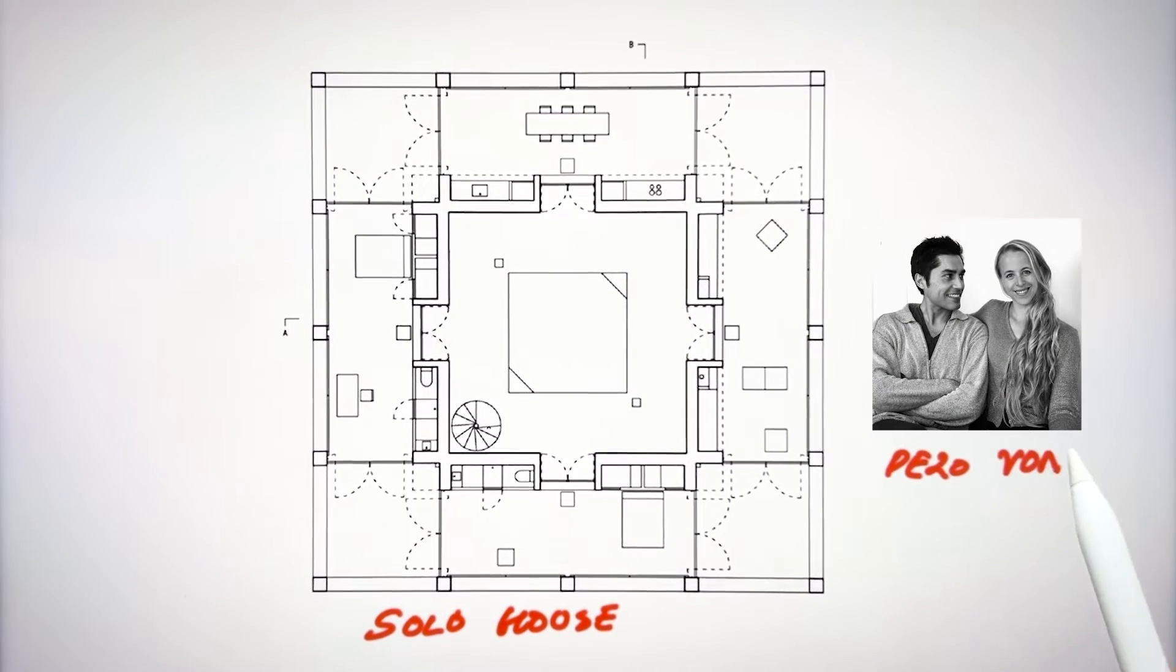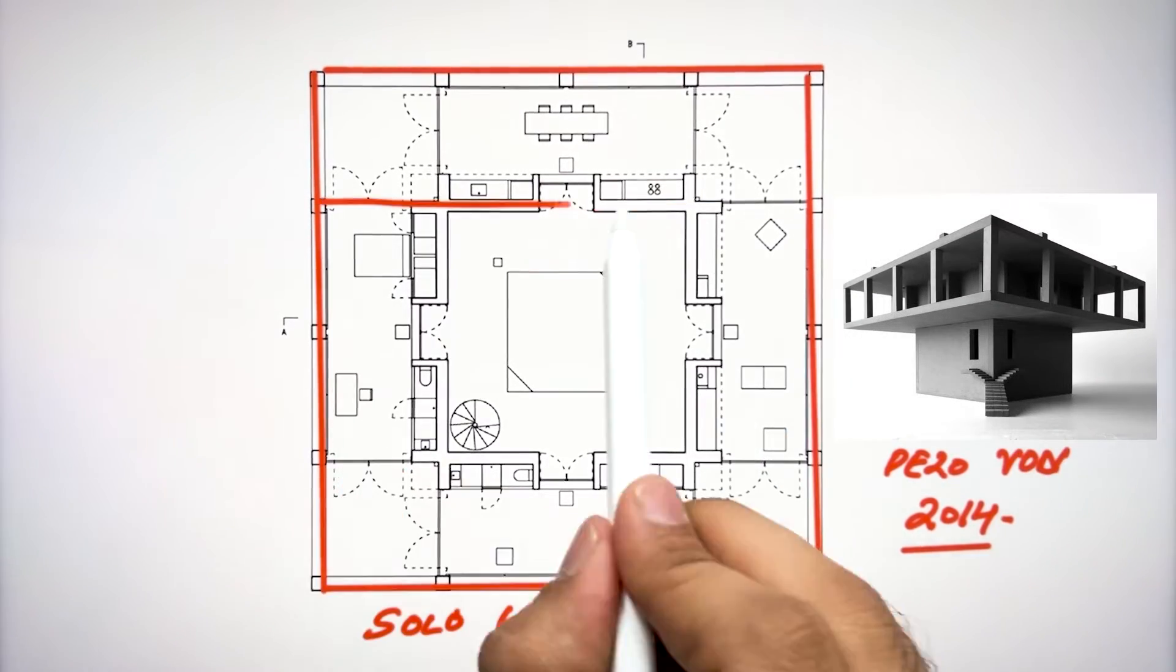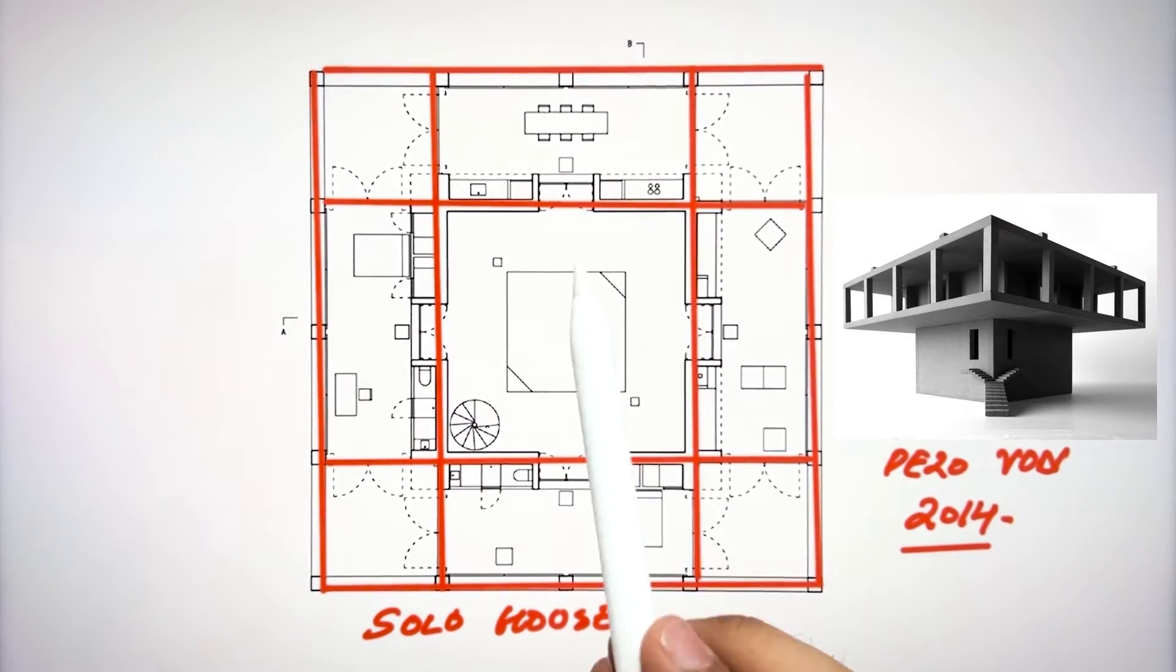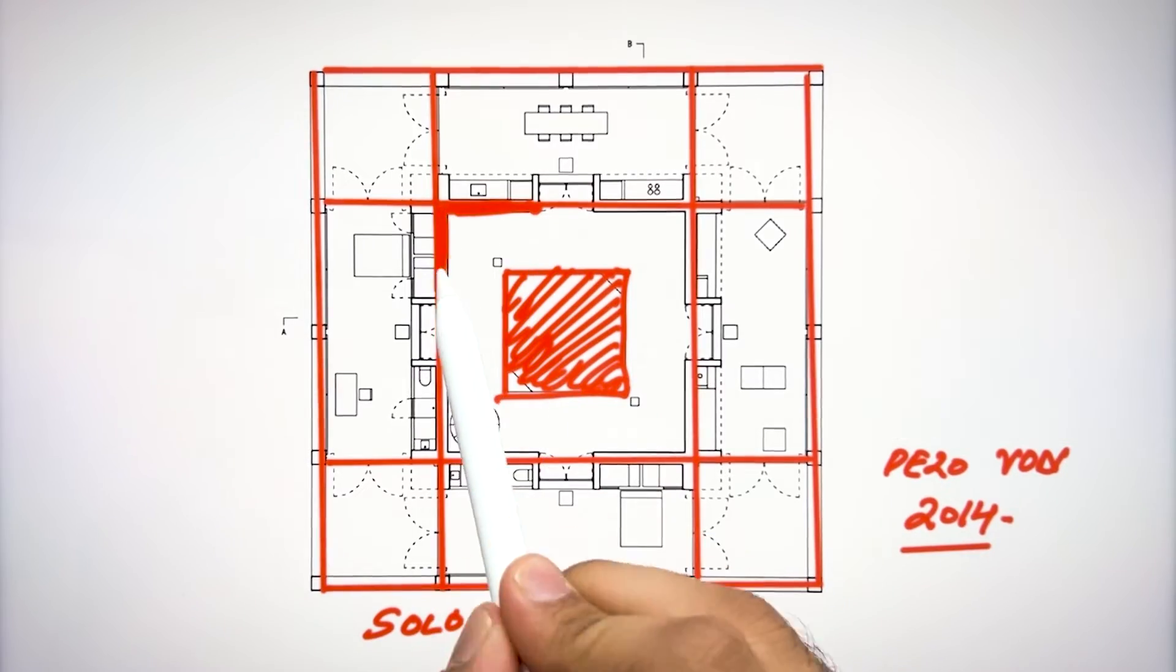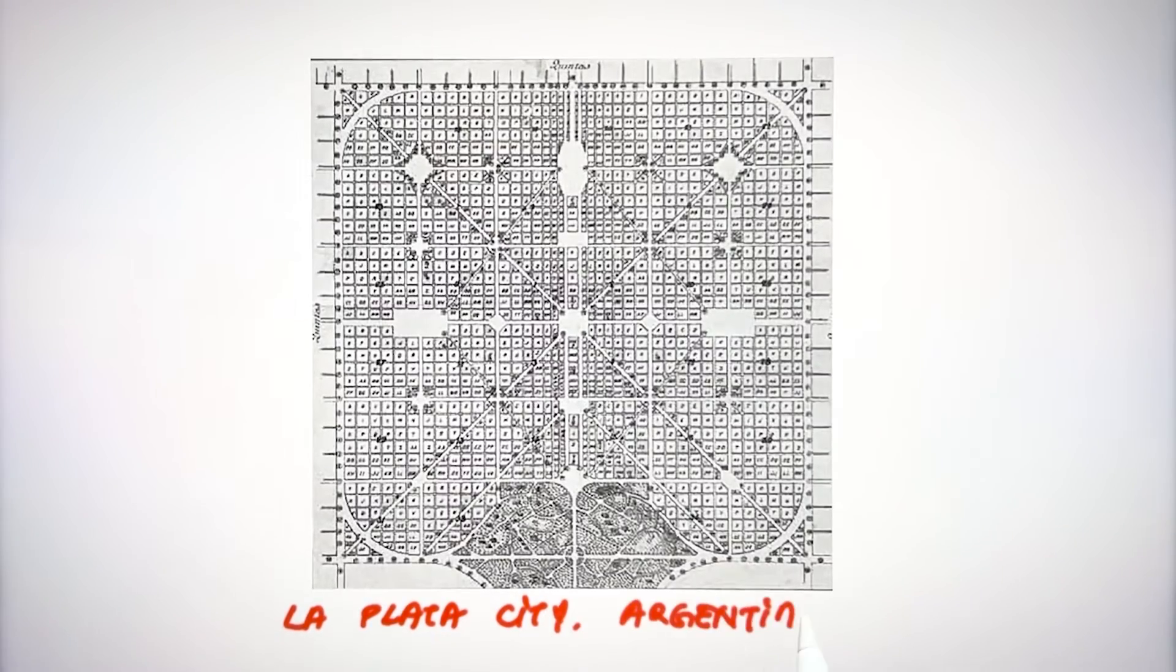This is the solo house designed by Pezo von Ellrichshausen in 2014. And this is a very recent architect who got inspiration from the nine grid concept. Here you can understand that this nine grid concept is not only used by previous generation of architects but also the recent architects are following the principle of design.